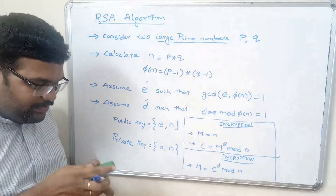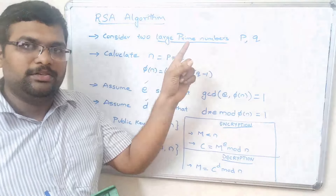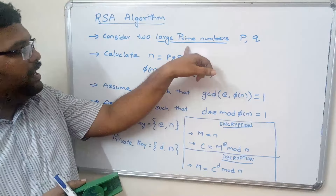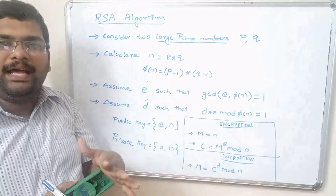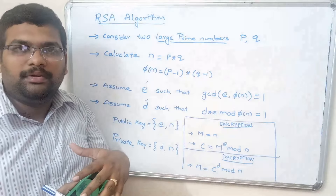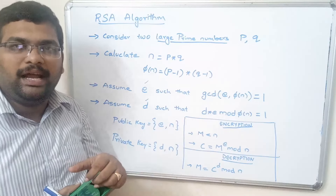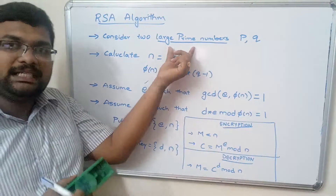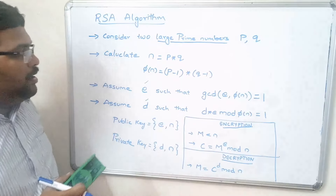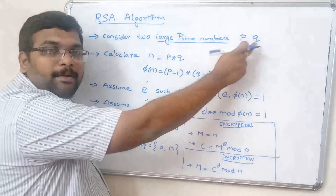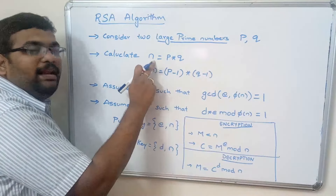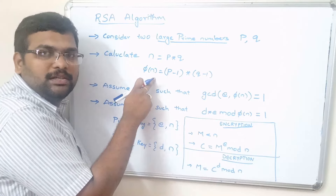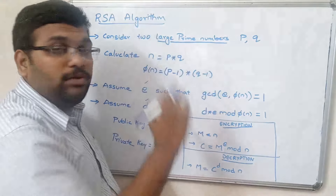This is very important: we have to consider large prime numbers. We can consider small prime numbers like 3, 5, 7, but if we use large prime numbers, the algorithm is more secure and not vulnerable to brute force attacks — the attacking possibilities are very less. To recap: first consider large prime numbers p and q, calculate n = p×q, then calculate phi(n) — Euler's totient function.